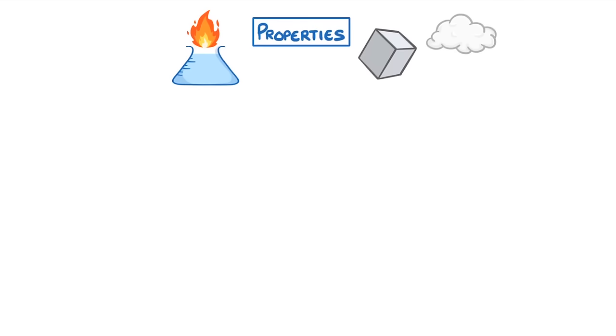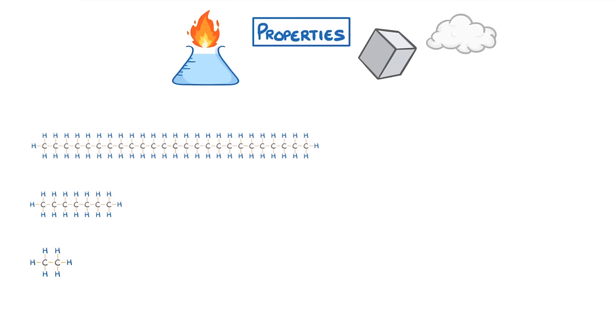The key point to take away from this video is that the properties of hydrocarbons, like alkanes, depend on the length of their carbon chain, with the shortest hydrocarbons having the lowest boiling points, and so being the most volatile and flammable, which makes them great fuels.